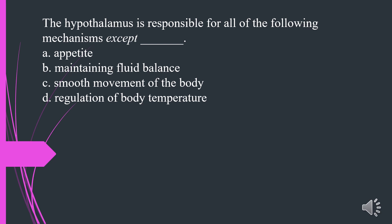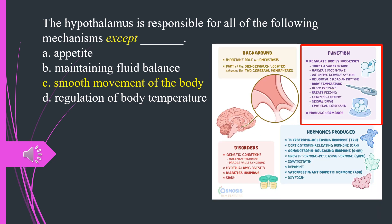The hypothalamus is responsible for all of the following mechanisms except what? A. Appetite. B. Maintaining fluid balance. C. Smooth movement of the body. D. Regulation of body temperature. The answer is C. Smooth movement of the body.